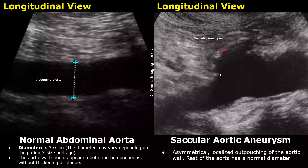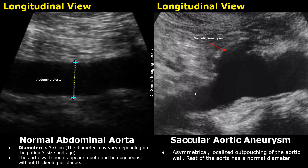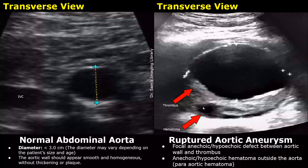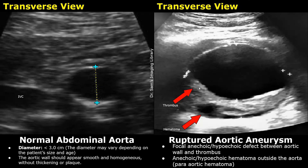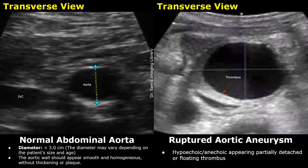A saccular aortic aneurysm is less common. It is a focal, asymmetrical, localized enlargement of the aortic diameter, while the rest of the aorta has a normal diameter. If an anechoic or hypoechoic area is seen just outside the dilated aorta, it indicates a ruptured aortic aneurysm. This anechoic area is a focal defect between the vessel lumen and the thrombus — this is an aortic rupture, a surgical emergency. Here is another case showing a ruptured aortic aneurysm with a focal hypoechoic defect behind the thrombus, which is a strong indicator of rupture.